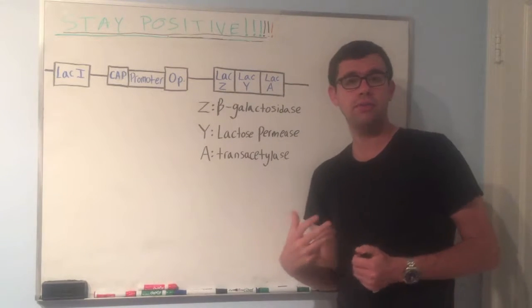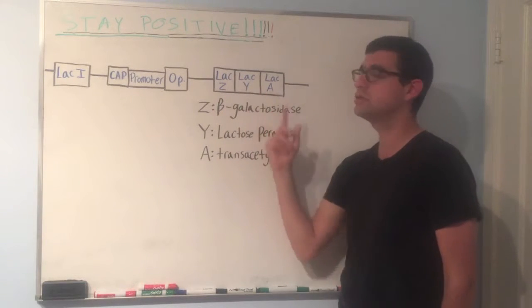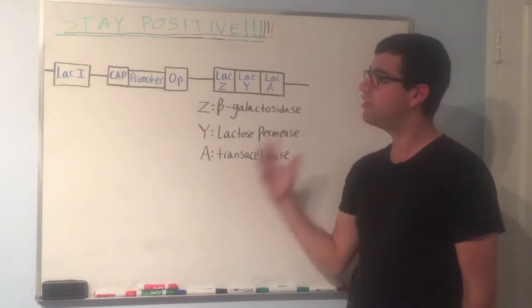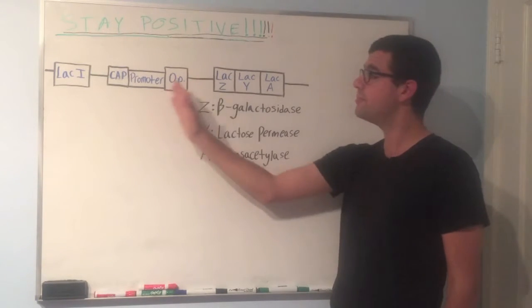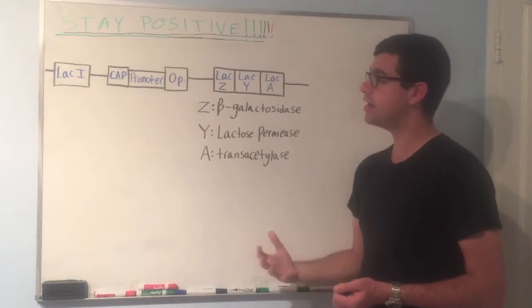But what happens when the lactose concentration is low? We don't want to express these. So what are we going to do, or what's the lac operon going to do? It's going to prevent RNA polymerase from even making its way to this portion of the DNA strand. How is it going to do that?